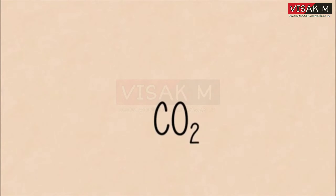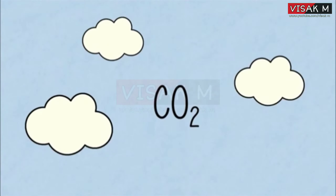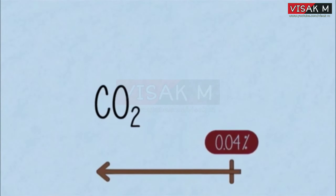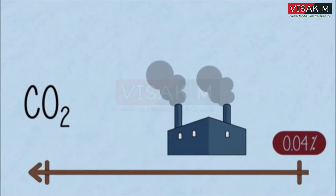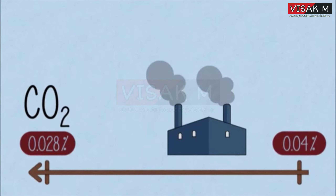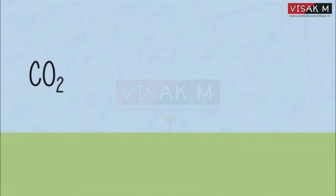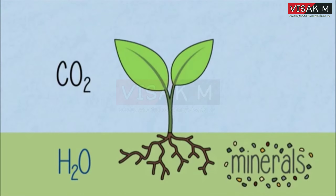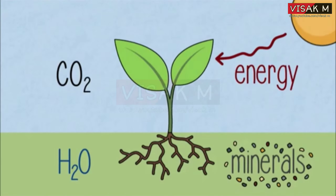So let's start with the gas carbon dioxide. Do you know how much there is of it in the air? The air contains nearly 0.04% carbon dioxide. But hundreds of years ago, before we started using fossil fuels, it was only 0.28%. Not much, you might think, but enough to enable plants to build up all the structures they need, with a little help from the water and minerals they take up from their roots, and energy from the sun.